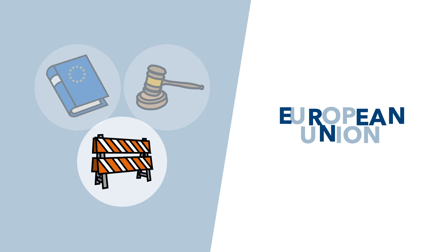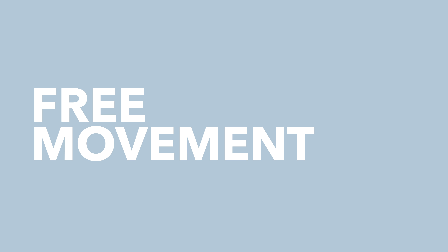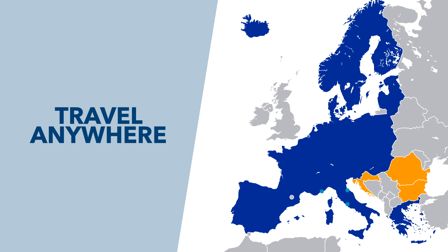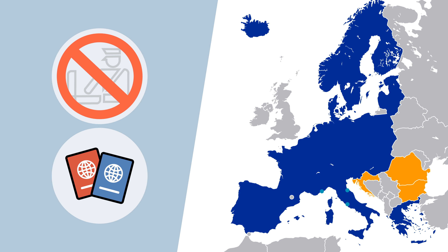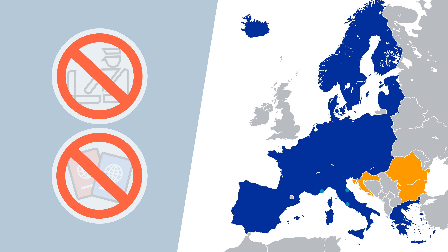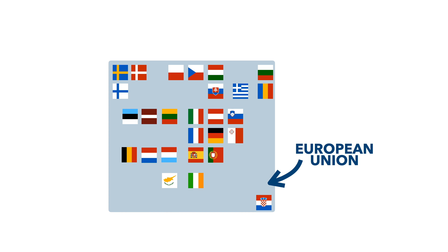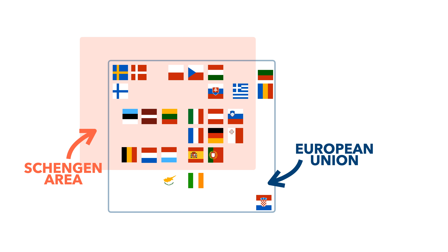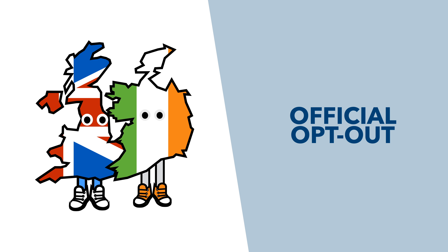Speaking of borders, there's also the Schengen area. This is the area within Europe of the greatest free movement. You can travel between these 26 European countries with no passports or border checks at all. Why just 26 and not the full 27 EU member states? Well, firstly, you have to subtract Ireland, which was able to secure an opt-out, something that the UK also had when they were a member.